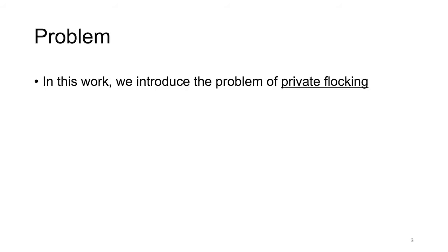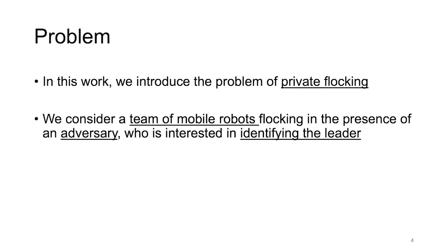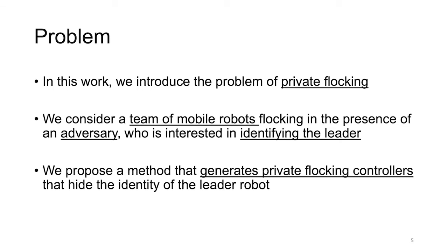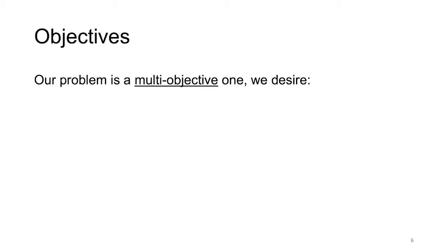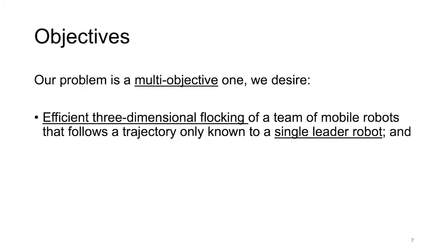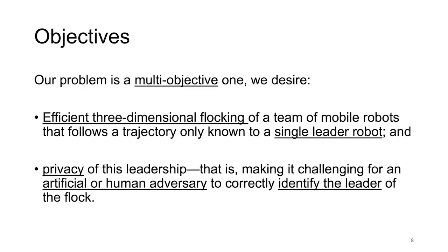In this work, we introduce the problem of private flocking. We consider a team of mobile robots flocking in the presence of an adversary who is interested in identifying the team's leader. We then propose a method which generates private flocking controllers that hide the identity of the leader robot, optimizing a multi-objective function: efficient three-dimensional flocking following a trajectory known only to a single leader robot, and privacy of that leadership.